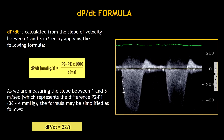Here we can see the DPDT formula. DPDT is calculated from the slope of velocity between 1 and 3 meters per second by applying the following formula. To obtain the DPDT, we need pressure number 2, which is the pressure at 3 meters per second; pressure number 1, which is the pressure at 1 meter per second; and we need the time in milliseconds, which is the time it takes for the velocity to rise from 1 to 3 meters per second.